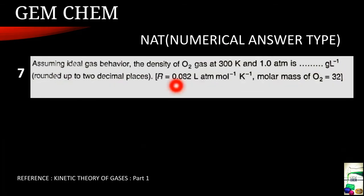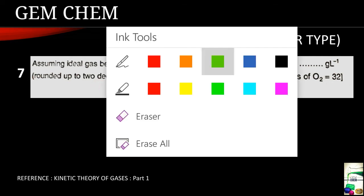Now the next question is also from kinetic theory of gases and the reference for this is part 1 video. Assuming the ideal gas behavior, the density of oxygen gas at 300 Kelvin and 1 atm is this much gram per liter. So we have to calculate the density. R value is being given and the molar mass is also given. And we have to round up the value to 2 decimal places.